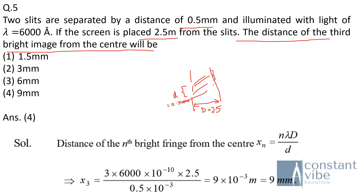We need the third bright fringe from the centre, so n = 3. Substituting n = 3, λ = 6000 Ångström, D = 2.5 m, and d = 0.05 mm into the formula xₙ = nλD/d gives the answer.